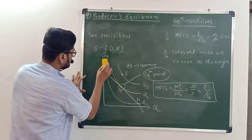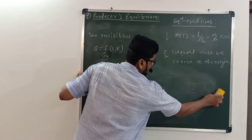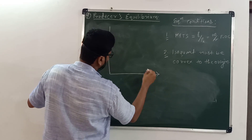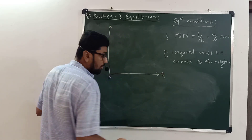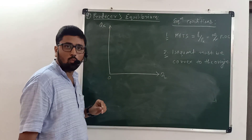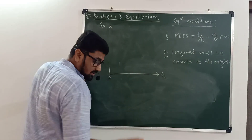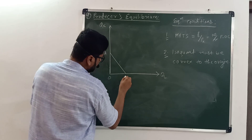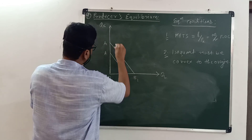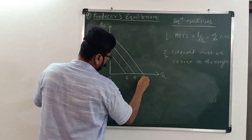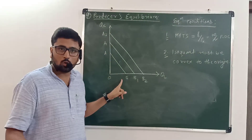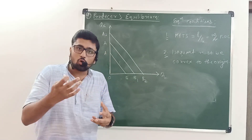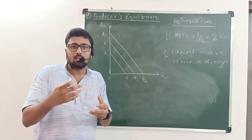Now we will understand the second case: minimizing cost with given output. Again, quantity of labor is measured along the x-axis and quantity of capital along the y-axis. The output is given, which means we have only one iso-quant. There are three iso-cost lines: AB, A1B1, and A2B2. AB shows the lowest cost; cost on A1B1 is higher than AB, and cost on A2B2 is higher than A1B1. An increase in cost shifts the iso-cost line outward.